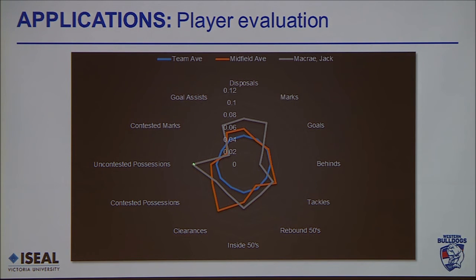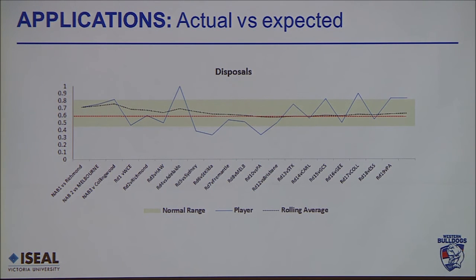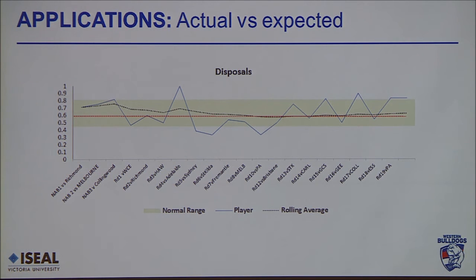For example, if a particular player has a high contribution to the team total of uncontested possessions but quite a low contribution to clearances, we can see that clearly. What we've started to do this year is actually track this longitudinally for each player. Looking at one player's disposal percentage contribution to the team for each game of the 2014 season — shown by blue dots — we can see they had a really good game in one instance and were quite variable towards the end of the season. The red line refers to the midfield average from the previous slide, and we see towards the end of the season this player is nudging above the midfield average — so we'd be fairly happy with their disposal output, although we may want to work on their consistency.